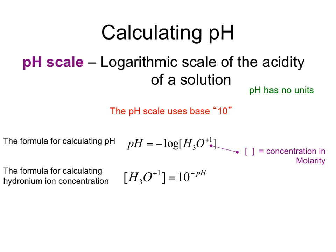pH stands for power of the hydrogen, and pH scales are logarithmic scales where you're going to use the base of 10. Below you will see two very important equations: pH is equal to the negative log of the hydronium ion concentration — the brackets represent molarity — and hydronium ion concentration is equal to the inverse log of pH, which would be represented as 10 raised to the negative pH value.